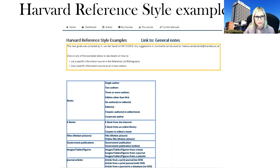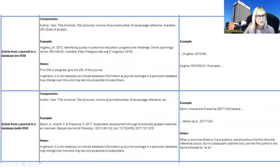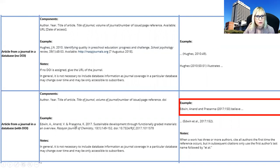Once logged in, you get to all the examples, including examples for books, e-books, and all the different bibliographic entries. For journal articles, we specifically want journal articles in the database with the DOI. You will find the DOI number there. The reference examples are shown — we want the one in the database with DOI. Apply all the available information exactly as shown in the example. Note that the journal title is always in italics.